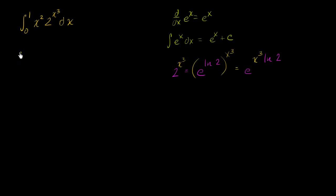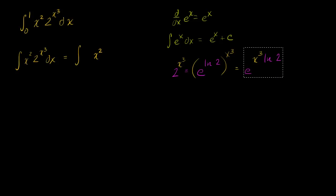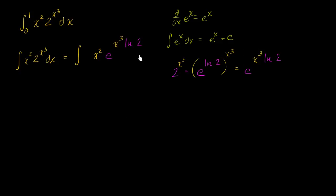Let's think about the indefinite integral of x squared times two to the x to the third power dx. I really want to find the antiderivative of this. This is going to be the same thing as the integral of x squared times e to the x to the third times the natural log of two dx — we already established that's the same thing as two to the x to the third. So I was able to get it in terms of e as a base. Maybe u-substitution could be at play here, because I have this expression x to the third times the natural log of two.